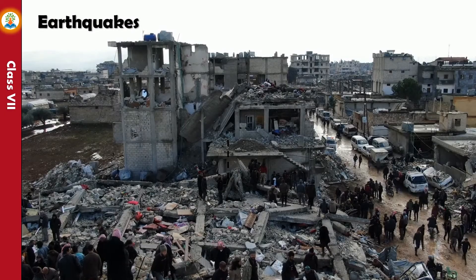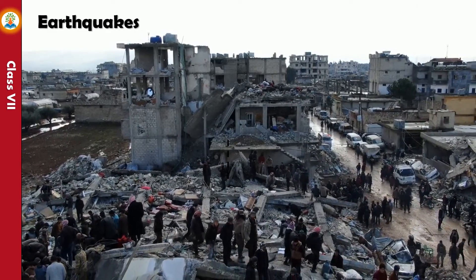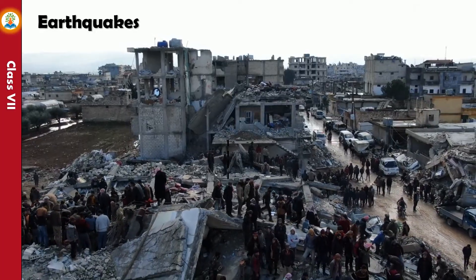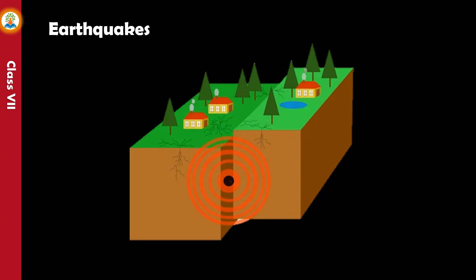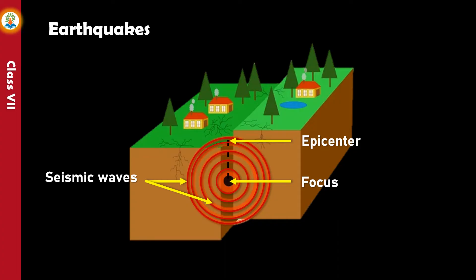Earthquakes are sudden vibrations inside the earth's crust caused by internal forces of the earth; they may also occur at the time of a volcanic eruption. The point where the earthquake originates inside the earth is called the focus. Earthquake vibrations spread out in all directions from the focus. The point on the earth's surface directly above the focus is called the epicenter, and this place experiences the most damage during an earthquake.